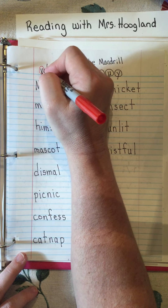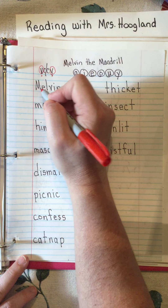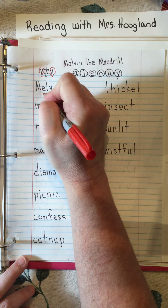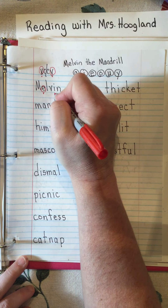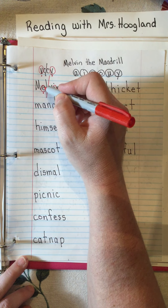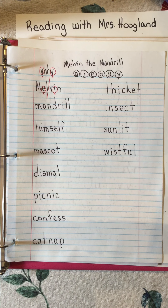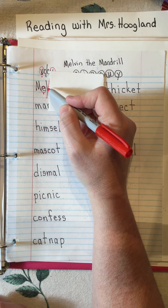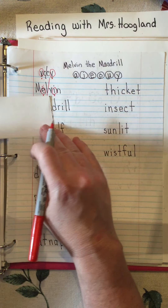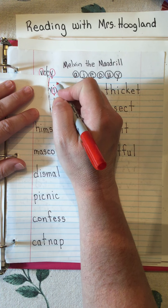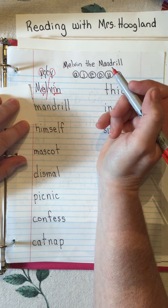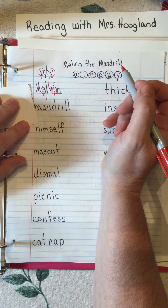Circling our vowels will help us see the vowel-consonant-consonant-vowel pattern. The very first word has a capital letter, so it's going to be a name. Names don't always follow patterns but we'll give it a shot. We circle the E and the I - there are two consonants right in the middle, so we split it. The first part is a closed syllable: 'mel,' and the second part is also closed, so the I says its short sound. The word is melvin - have you ever heard the name Melvin before?